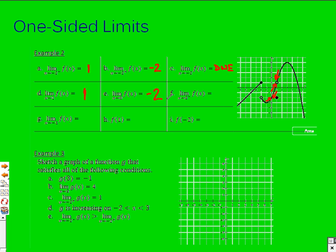For the limit as you approach positive 3 from the left-hand side, here's positive 3 on the graph. Approaching just from the left, it looks like the y value is 5. It's actually the same from the right-hand side, but make sure you're not confusing x approaching negative 3 — it's x approaching positive 3 from the left. For the limit as x approaches negative 1, it doesn't matter from the left or right; approaching from both sides, the y value is negative 3.